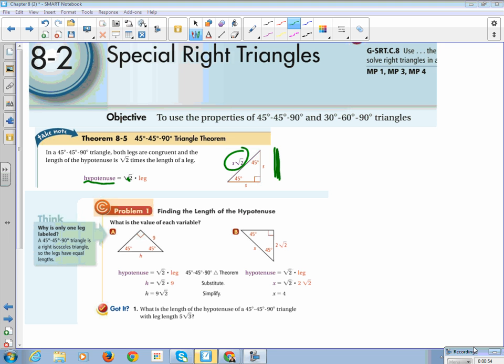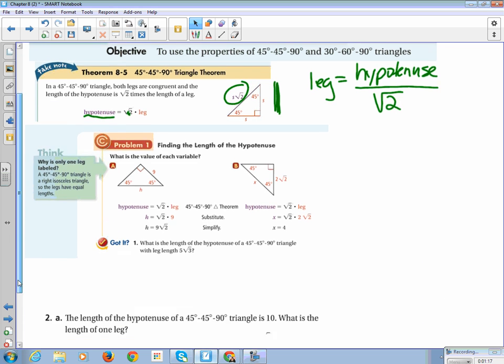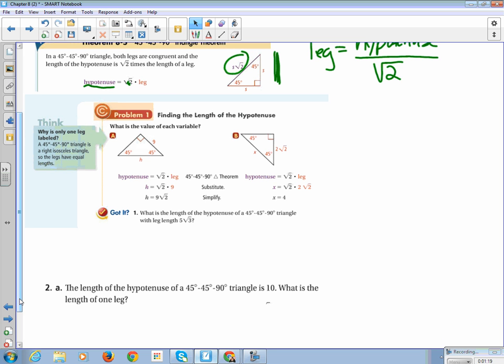Now, conversely, a leg, this is a bonus feature for you guys, a leg is going to be equal to the hypotenuse divided by the square root of 2. That's an extra bonus feature that we won't find in the theorem explanation. So how that works is, now let me just preface this.